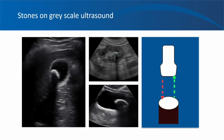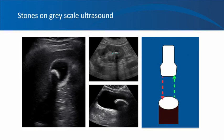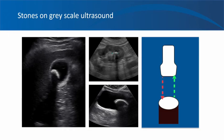How do stones appear on grayscale ultrasound? On grayscale imaging, stones appear as hyperechoic or bright structures accompanied by acoustic shadowing. Acoustic shadowing is the anechoic or black band seen beyond echogenic structures that do not transmit ultrasound waves, such as stone and bone or any calcified structure. It is similar to us forming a shadow when we are in the pathway of light.